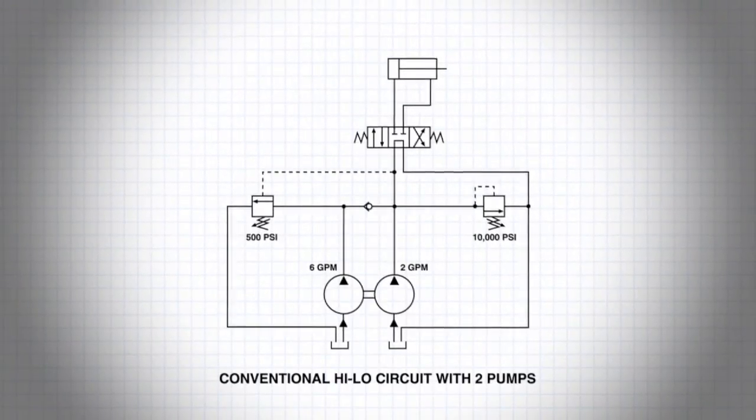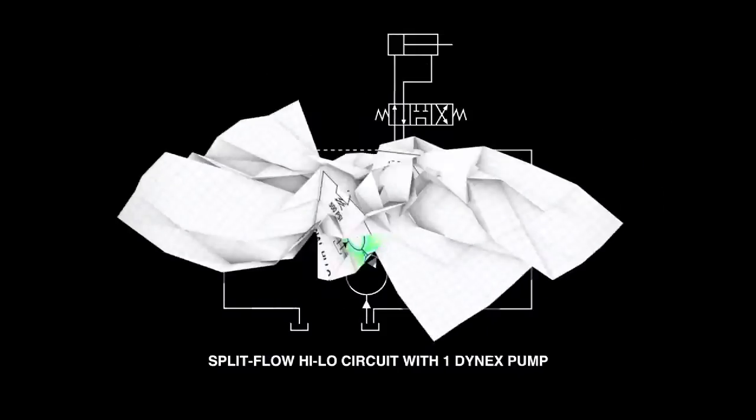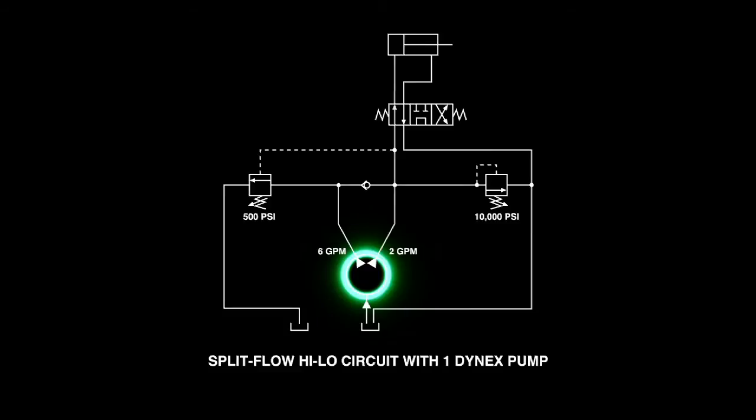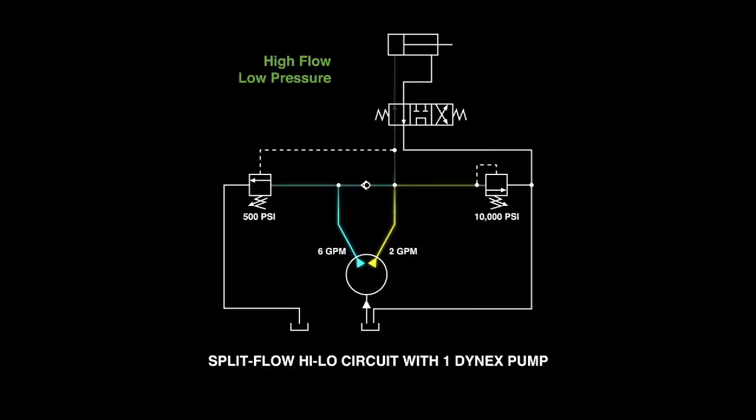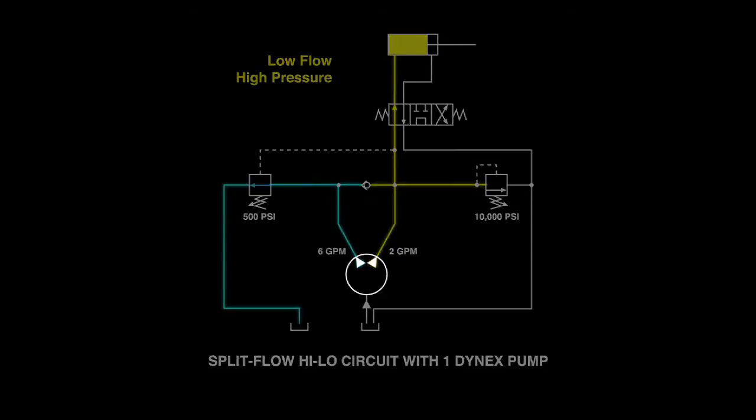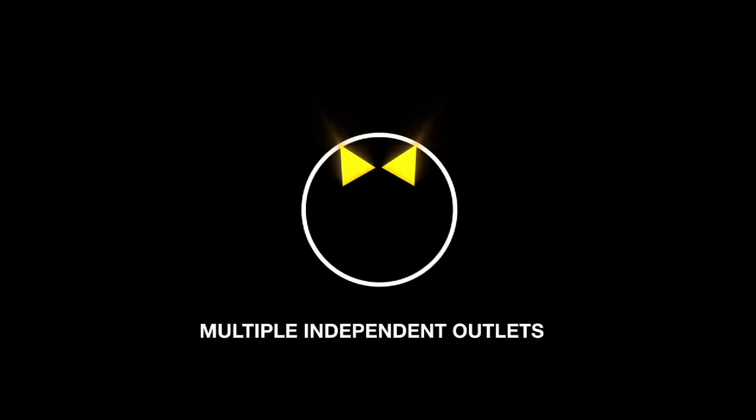Conventional high-low circuits use two pumps to meet changing flow and pressure requirements. A split flow circuit combines the output from both outlets to rapidly advance the cylinder. The high flow is then unloaded and pressure rises to the setting on the system relief valve. Multiple independent flows from the pump satisfy the changing flow and pressure requirements in the system.